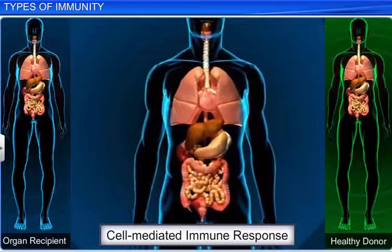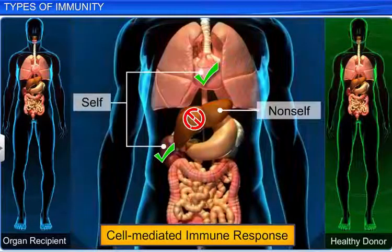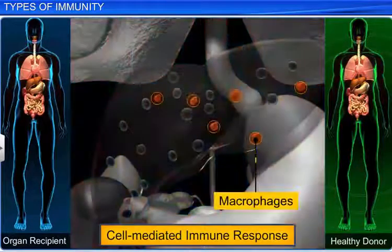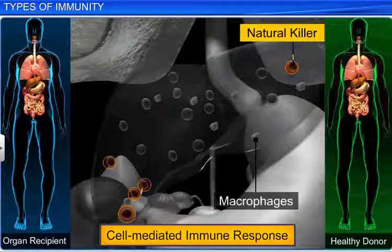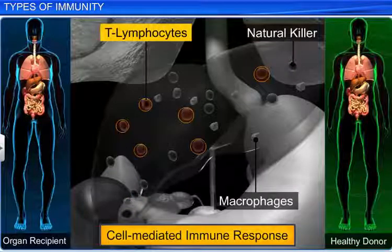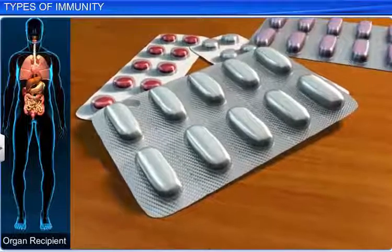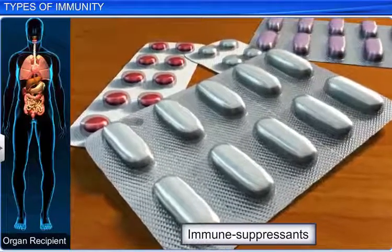This ability of the body to differentiate between self and non-self, while rejecting grafts, is the cell-mediated immune response. It is an immune response that doesn't involve antibodies, but involves the activation of macrophages, natural killer (NK) cells, antigen-specific cytotoxic T lymphocytes, and the release of various cytokines that fight antigens. Patients who have had organ transplants have to take immune suppressants all their lives to inhibit their body's immune response against the transplant.